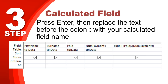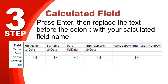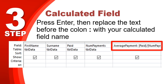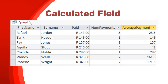That expr1 is the label or title that will appear at the top of the column for this calculated field. We don't want it to say expr1 — we want to give it our own name. So change expr1 to something like 'average payment'. If you want spaces in the name, put it in square brackets so Access knows it's one thing. So there we go: the calculated field is called 'average payment' and the calculation divides the paid field by the number of payments field. When you run the query, you'll see 'average payment' at the top of that column.